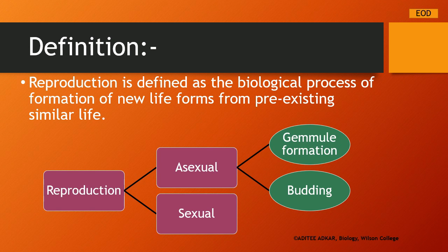Sexual reproduction is the one which involves the formation and fusion of gametes, and asexual reproduction does not involve the fusion or formation of gametes. In this chapter we are going to discuss two types of asexual reproduction: gemmule formation and the process of budding.